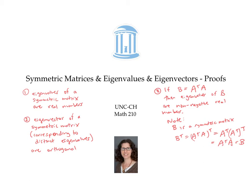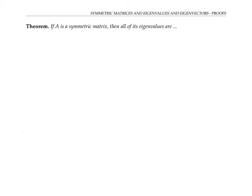In the rest of this video, we'll prove these three facts. The first fact we want to prove is that if A is a symmetric matrix, then all of its eigenvalues are real numbers. We haven't talked yet in this class about complex numbers, so let me give you a quick review or primer on complex numbers.